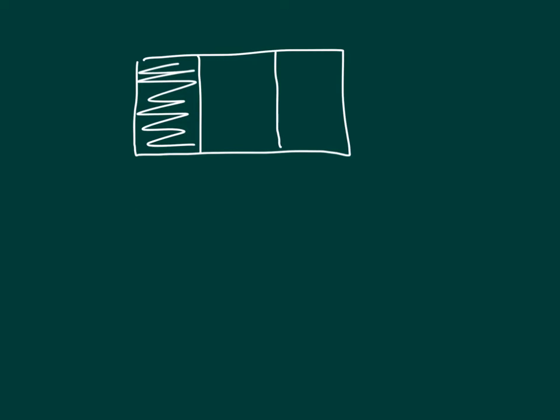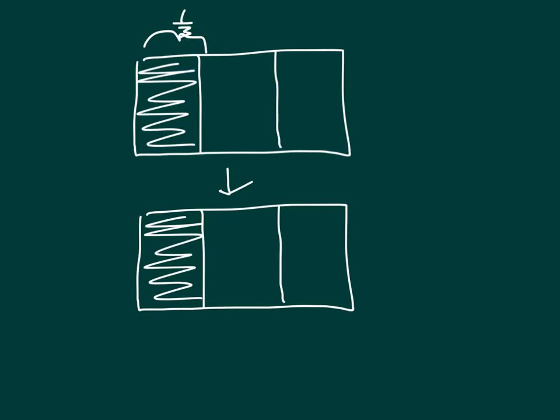Here I have an area model. This area model represents one-third. What happens when I draw a dotted line across our figure? I no longer have one-third. What I have now is two-sixths.